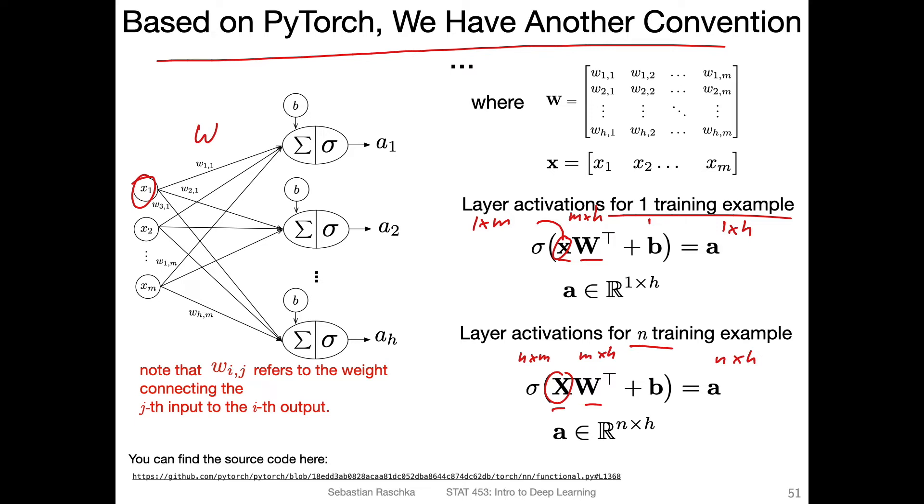This is actually quite convenient from a computational perspective. If we have code, we don't have to change much around. If you don't believe me that this is the way PyTorch does it, here is the source code. This is like the common convention in PyTorch, how the linear transformation happens.